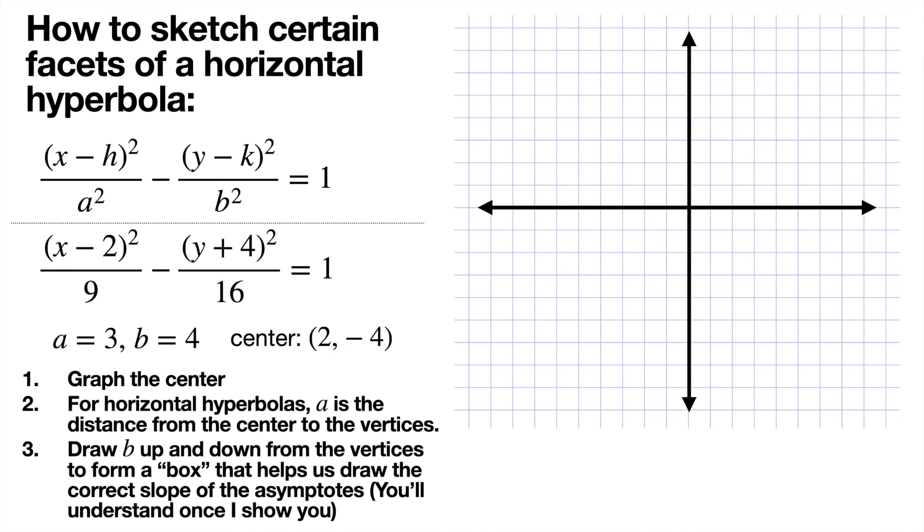Step 1, graph the center. So the center is given by h and k, in this case 2 and negative 4. Step 2, a in a horizontal hyperbola is the distance to the left and the right of the center in order to get to the vertices. So to the right and to the left, and a is 3 in this case.